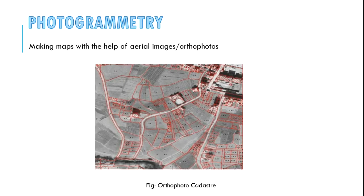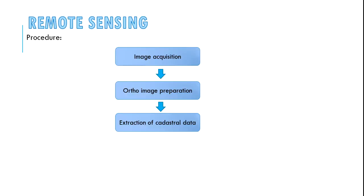Photogrammetry — under photogrammetry, aerial photos and orthophotos are used to prepare the digital cadastral map, as shown in the figure. It is less accurate compared to ground survey, but it is very fast and cheap.